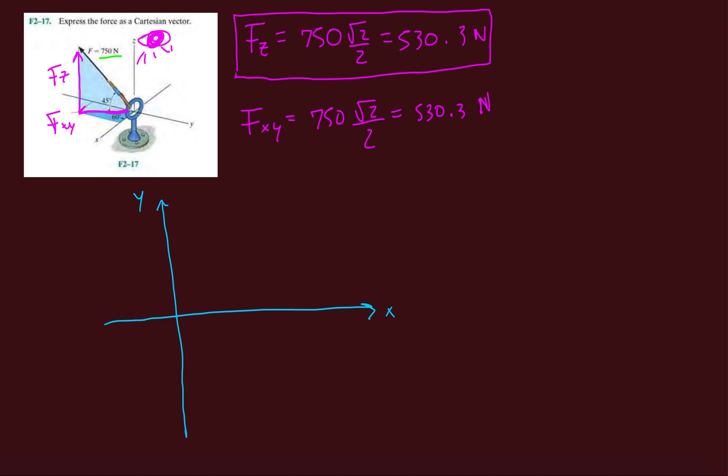But this Fxy is going in the negative y direction. So it is going, it's actually going in this direction. This is Fxy. And it makes an angle of 60 degrees with the x-axis, so they give us this.